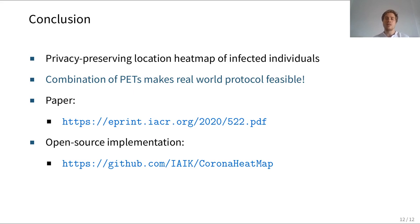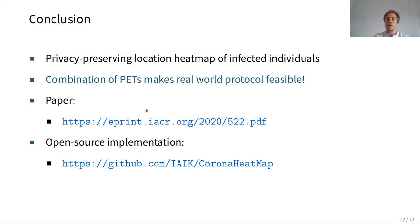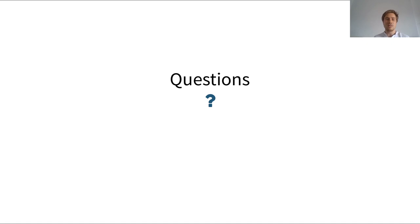To conclude, we have created a protocol which produces a heat map of the aggregated location data of infected individuals, helping to track the spread of disease and assist government officials in taking targeted measures. We realized this by combining homomorphic encryption, differential privacy, and invalidation techniques derived from zero-knowledge proofs. Full details are available in our paper on ePrint, and our open-source C++ implementation is available on GitHub. Thank you for your attention — please feel free to ask any questions during the conference.